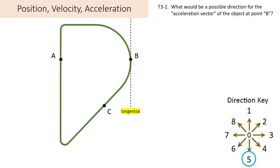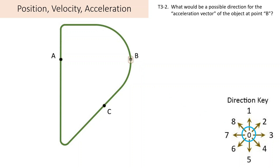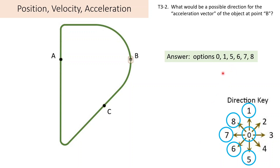A nice one-dimensional example to better explain this: consider throwing a ball straight up in the air. It slows down on the way up, stops for an instant, reverses direction, and falls back down. That's a good example of free fall, where the acceleration is down regardless of whether the ball is thrown up, down, or sideways. And last but not least, if the object was just completely at rest at point B, we could have the zero vector as the acceleration. So we get every option except 2, 3, and 4 — the options that can never happen are those with components of acceleration pointing away from the center of curvature.